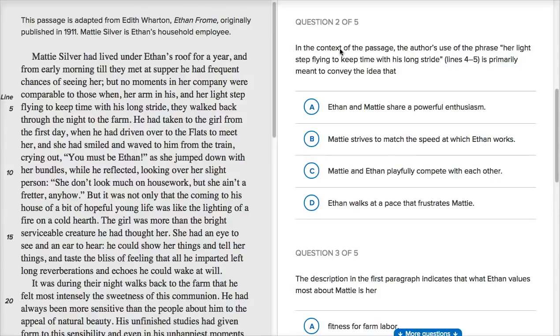Now that we've read the passage, let's see if we can answer the questions. In the context of the passage, the author's use of the phrase 'her light step flying to keep time with his long stride,' lines four to five, is primarily meant to convey the idea that - so that's right over here, lines four to five, so her light step flying to keep time with his long stride.